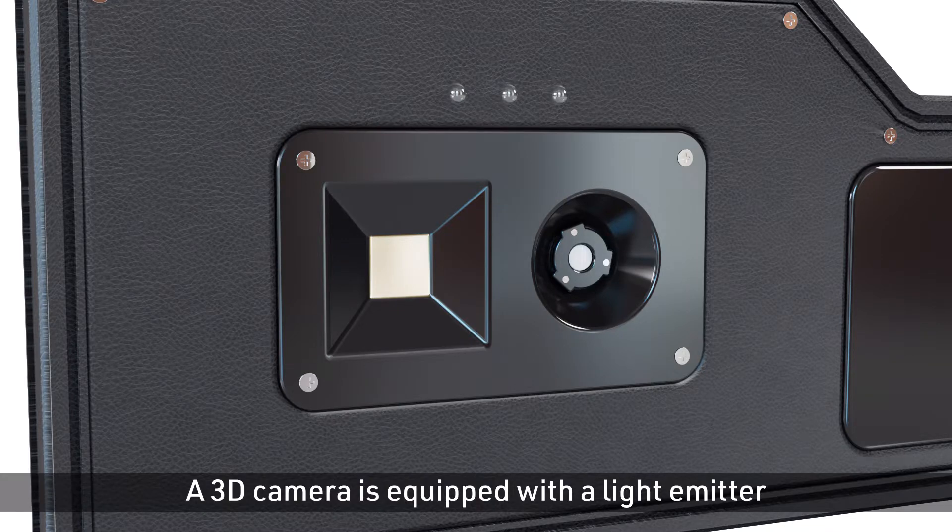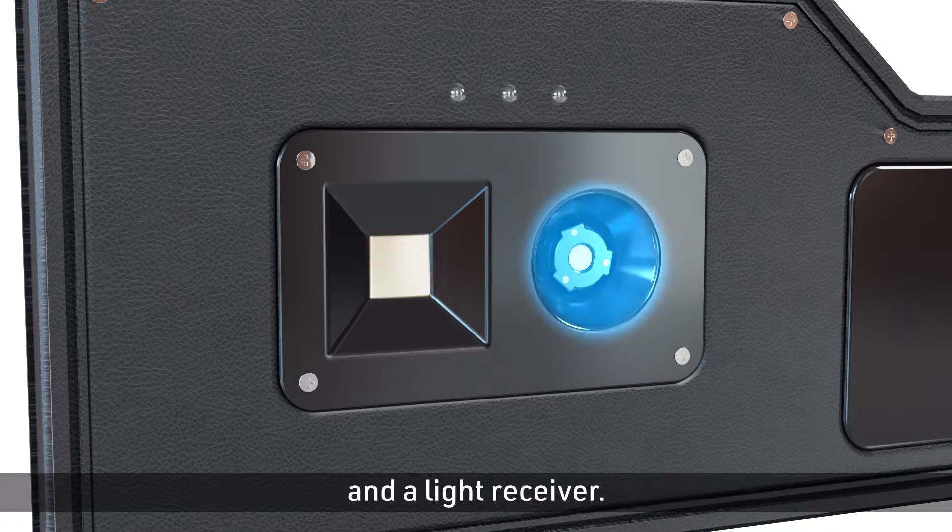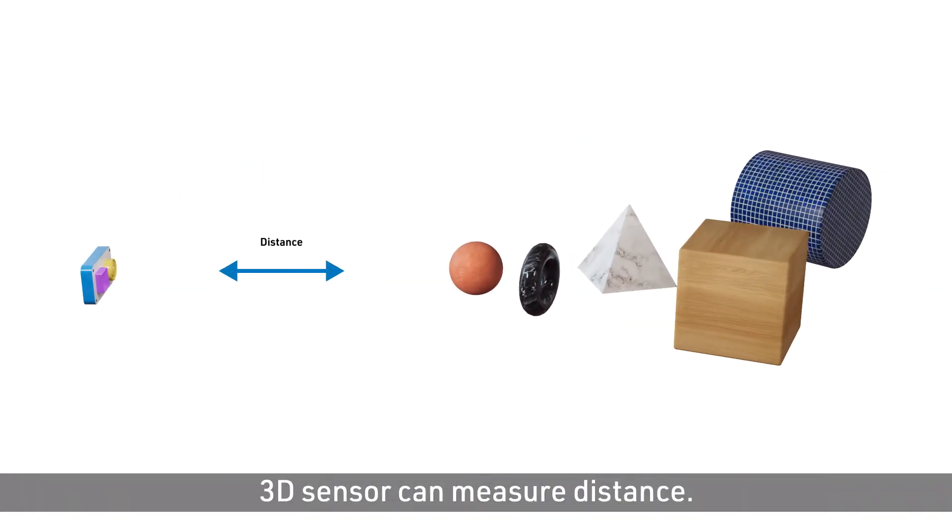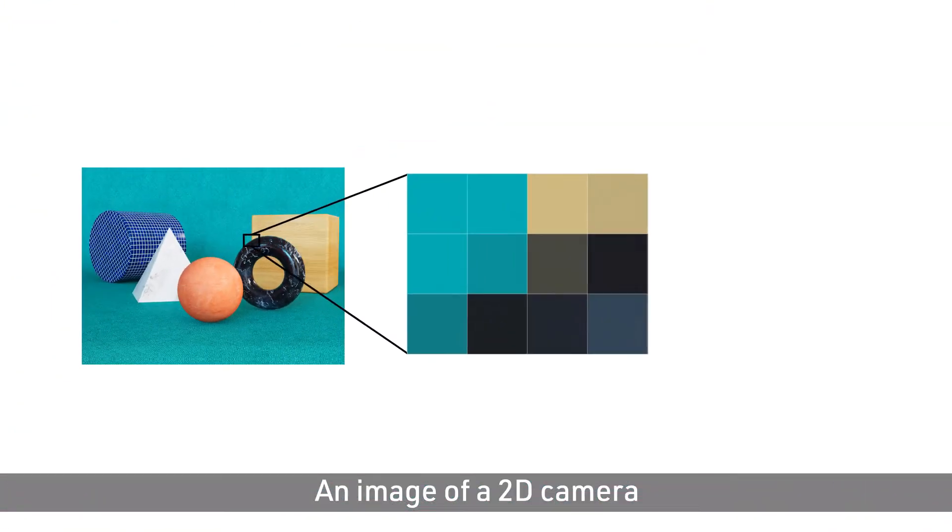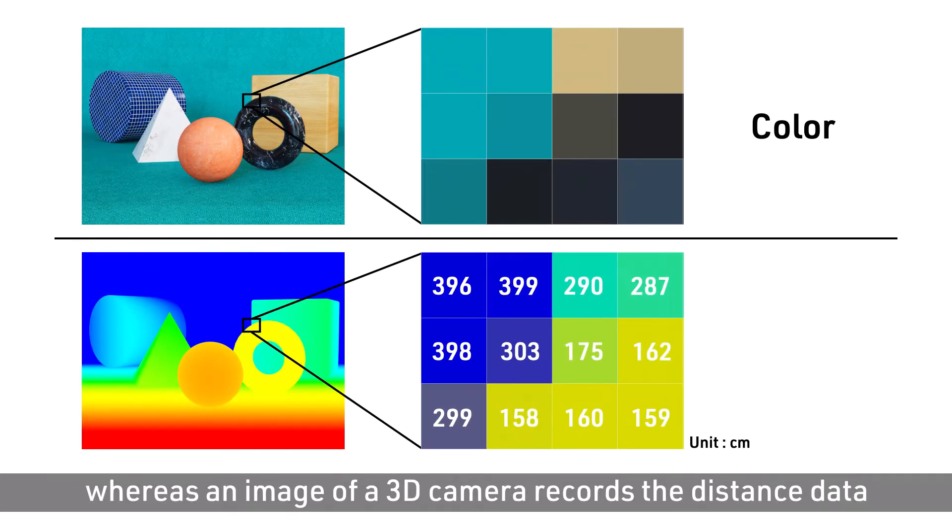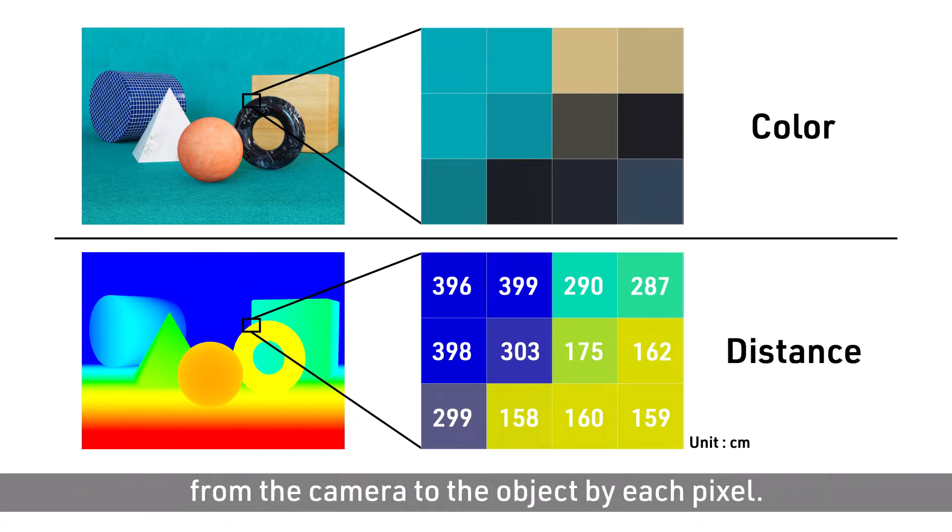A 3D camera is equipped with a light emitter and a light receiver. 3D sensors can measure distance. An image of a 2D camera records the color data by each pixel, whereas an image of a 3D camera records the distance data from the camera to the object by each pixel.